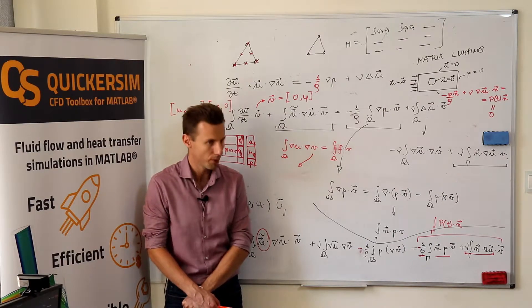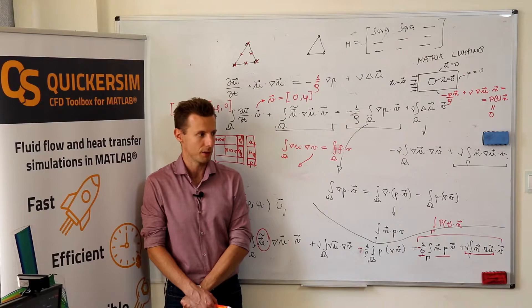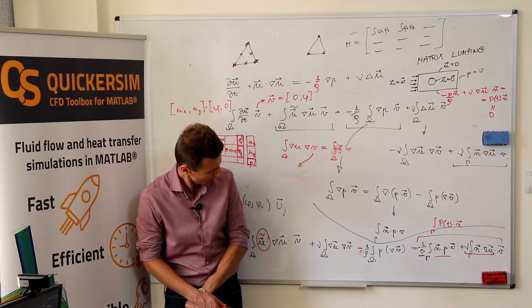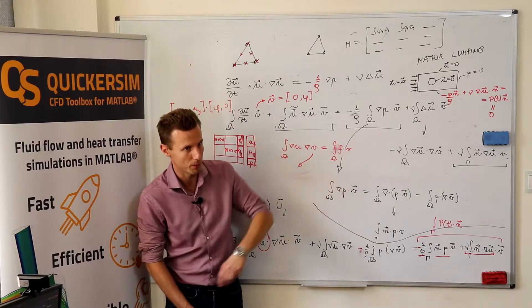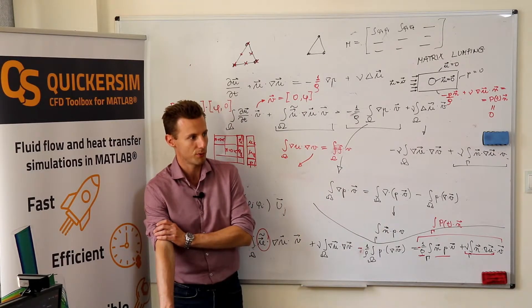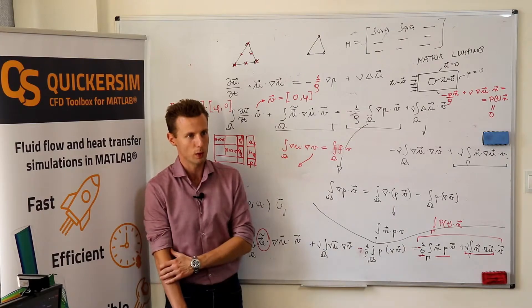You can even start with zero velocity field. It's a very safe choice because it means that your first solution is like the solution of the Stokes problem, so very, very viscous flow, so you're really safe that it will be solved.